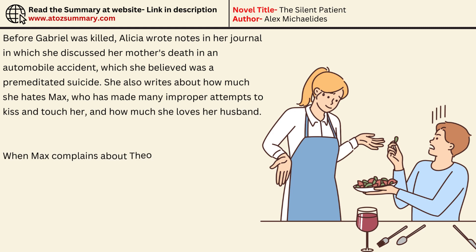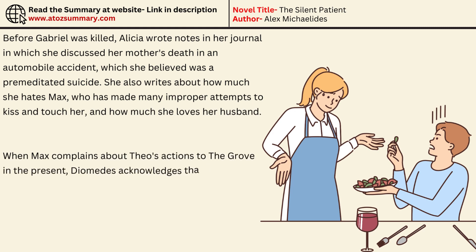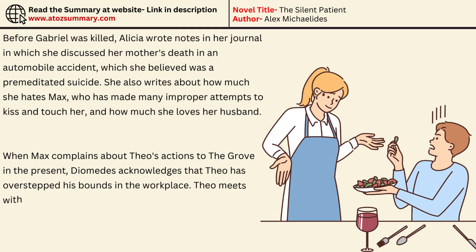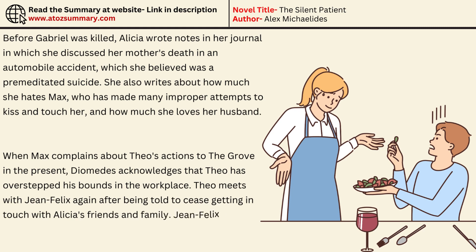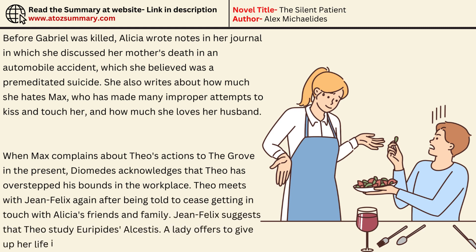When Max complains about Theo's actions to the Grove, Diomedes acknowledges that Theo has overstepped his bounds in the workplace. Theo meets with Jean Felix again after being told to cease contacting Alicia's friends and family. Jean Felix suggests that Theo study Euripides' Alcestis — a play in which a lady offers to give up her life in place of her husband, who is all too ready to take it.